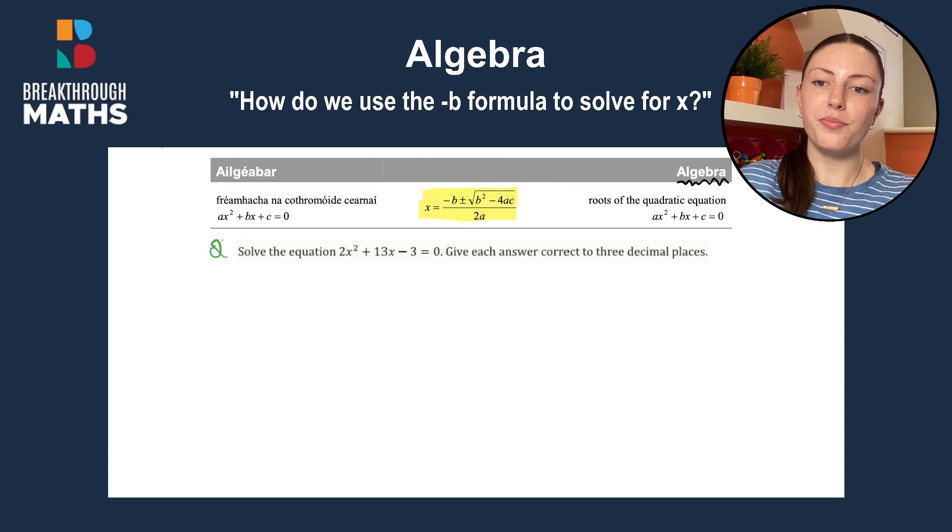So here's our question. We're asked to solve the equation 2x squared plus 13x minus 3 is equal to 0, giving our answer correct to three decimal places. So we need to remember that when we come to our final answers at the end.